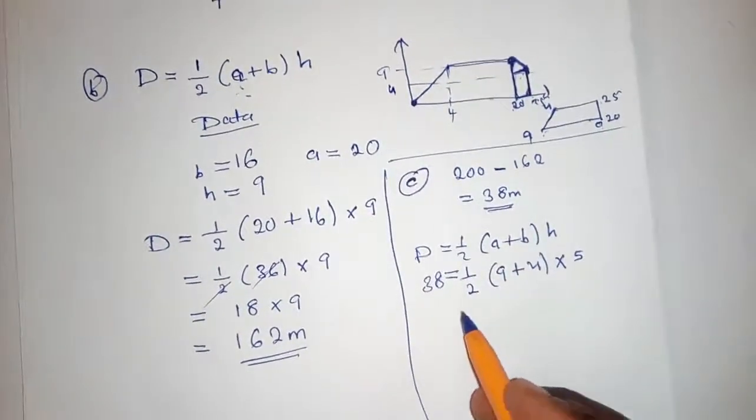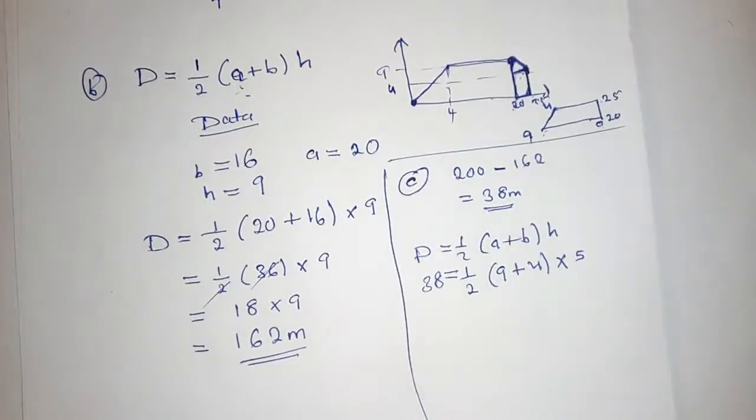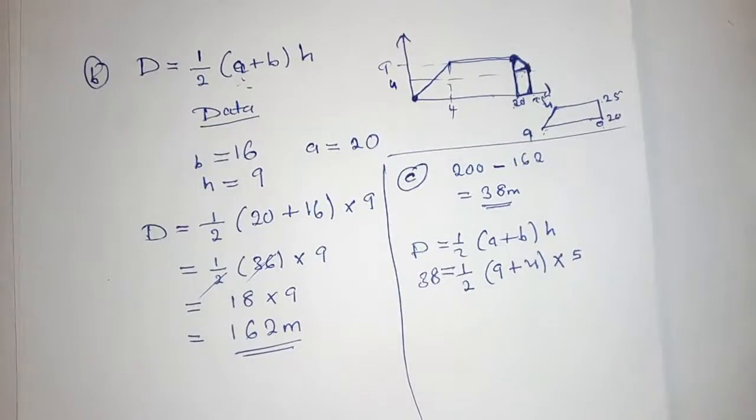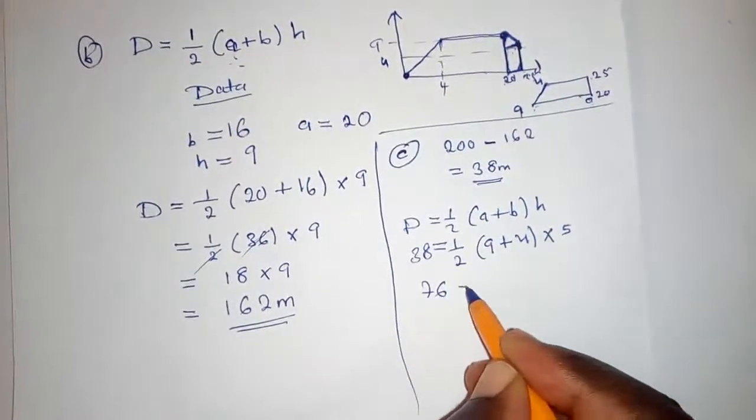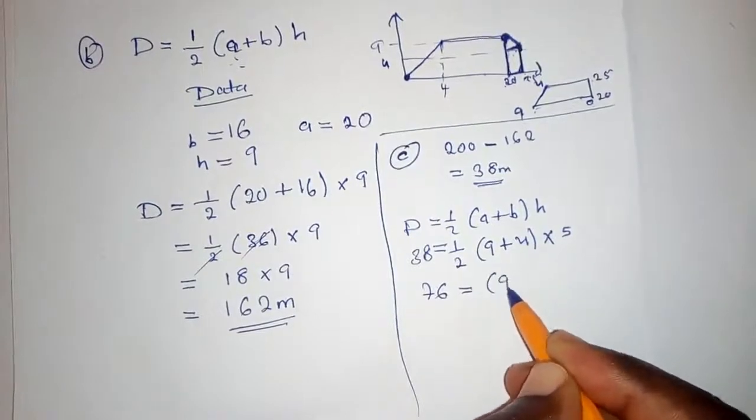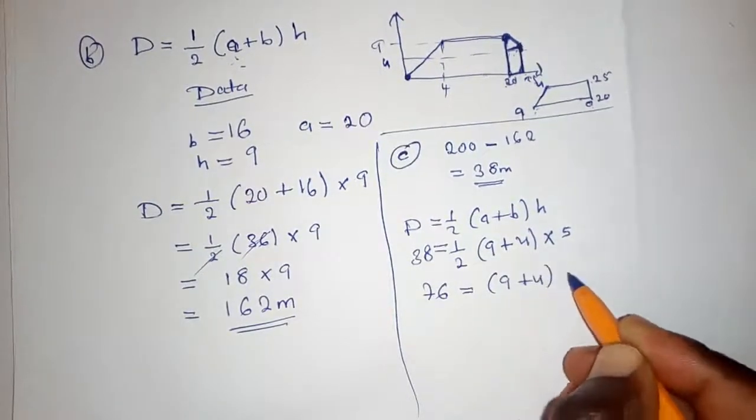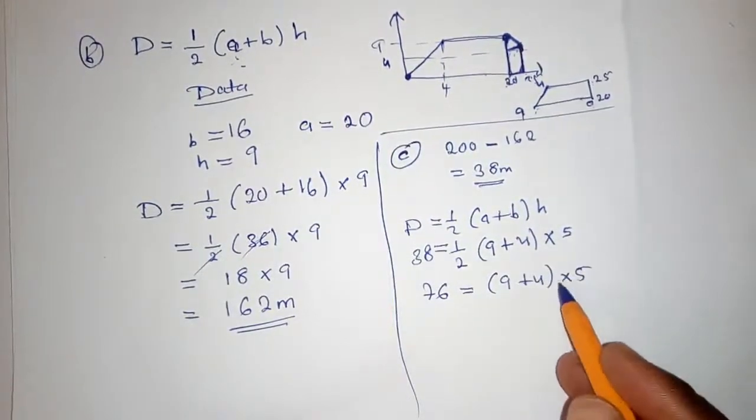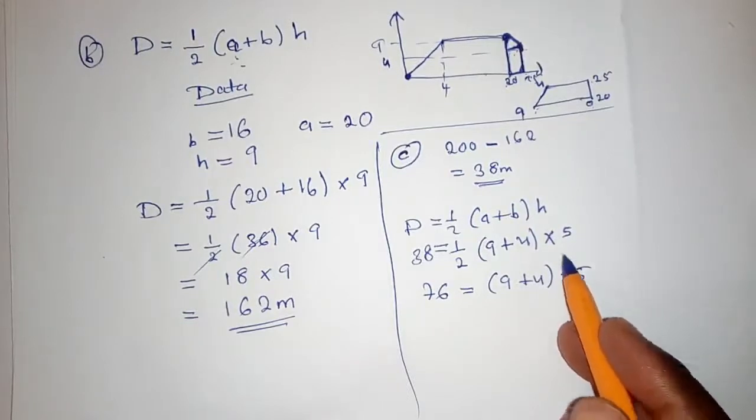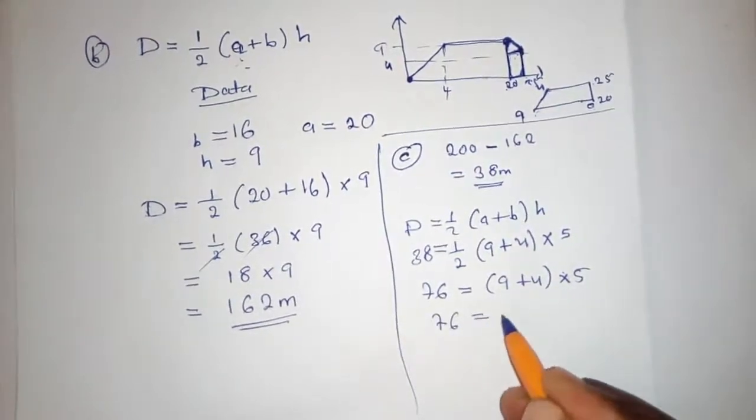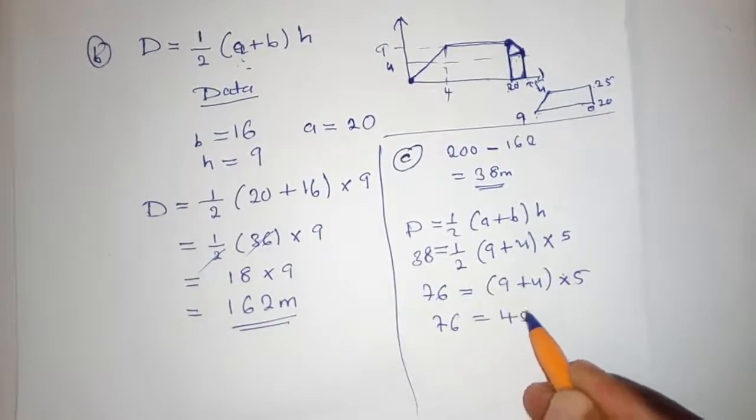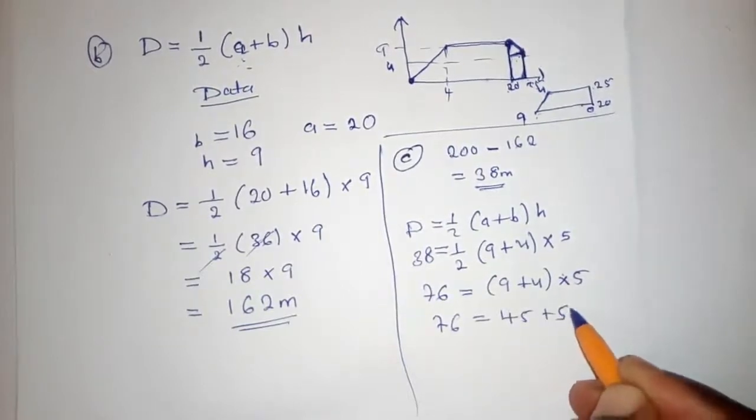We cross multiply. When we cross multiply, 2 by 38, our answer will be 76, which equals what we have here. This will be 45 plus 5U. So we can group like terms.